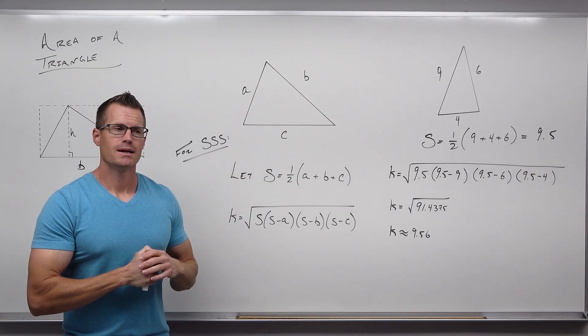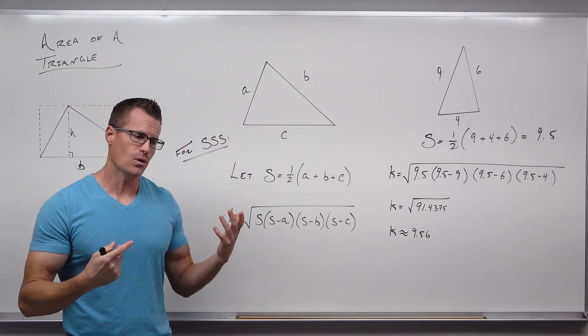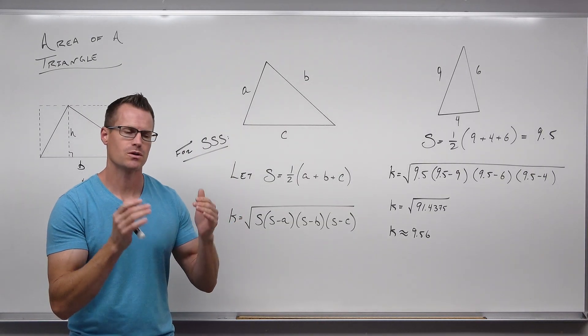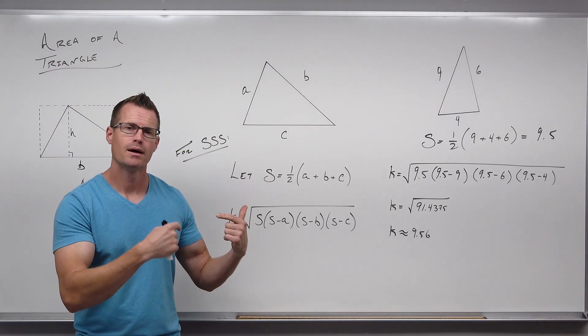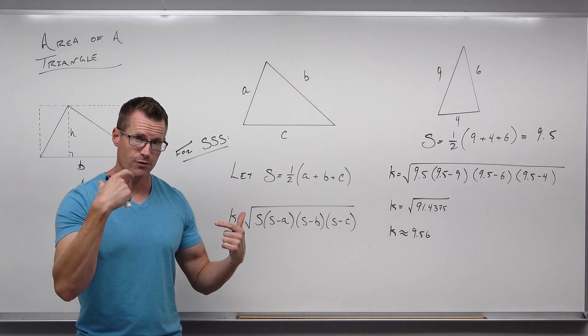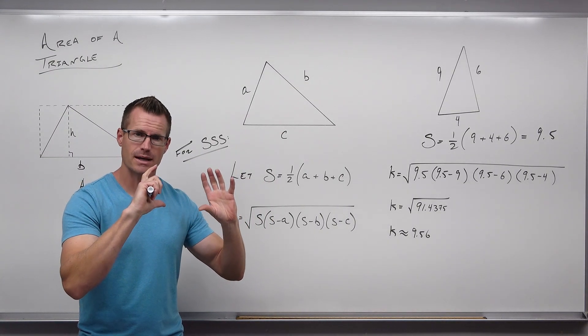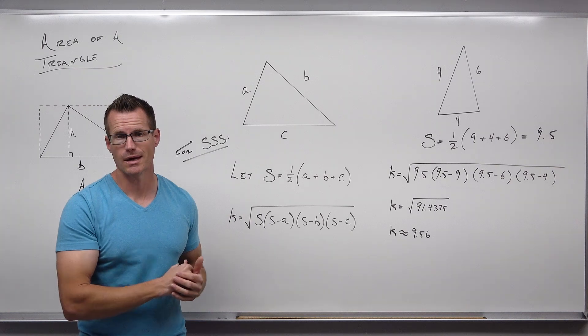That's a nice quick way to find the area if you know all three sides. Find s — it's half the perimeter — then take the square root of s times (s minus each of your sides) multiplied together.